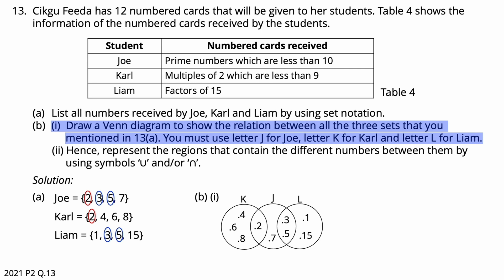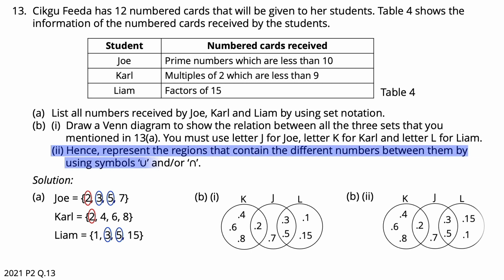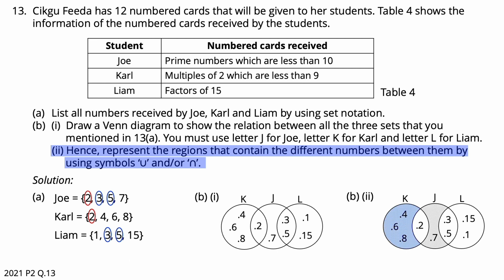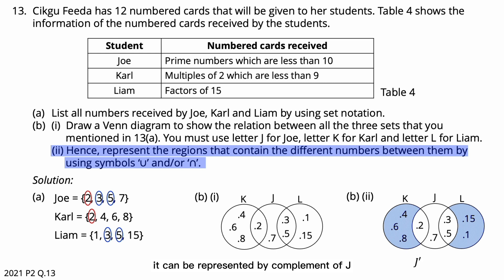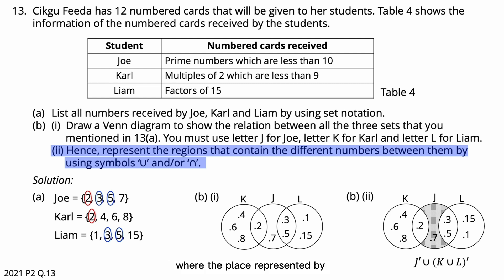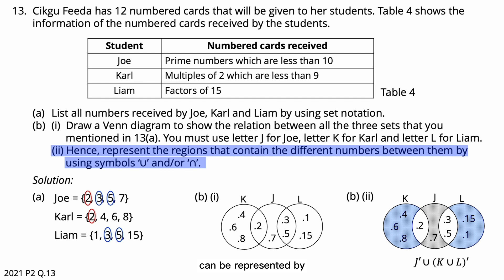Question 13: Represent the regions that contain the different numbers between the sets using symbols union or intersect. The regions containing different numbers are 4, 6, 8, 7, 1, and 15. The numbers 4, 6, 8, 1, and 15 are outside set J, represented by the complement of J. The number 7 is outside sets K and L, represented by the complement of K union L. Therefore, the different numbers can be represented by the complement of J union the complement of (K union L).